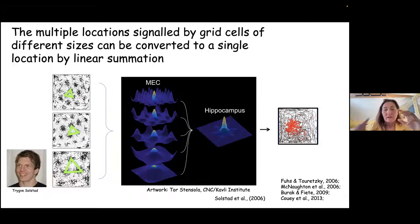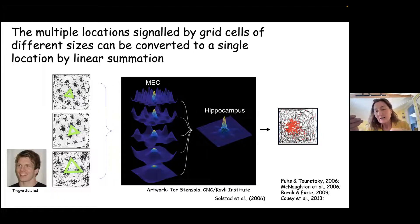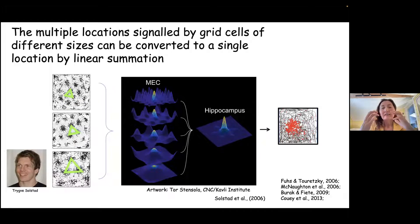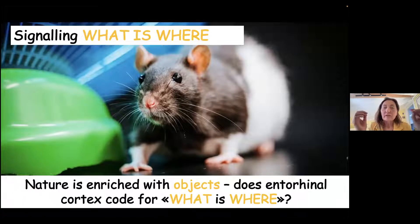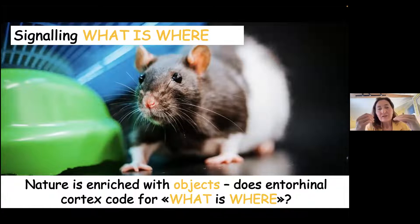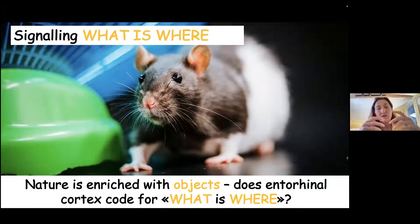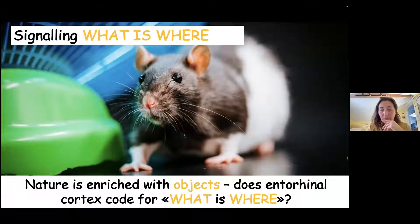We can go from the information given by the entorhinal cortex to the hippocampus. We concluded that this model makes it quite likely that the hippocampus is using information from the grid cells to make place fields. I promised to talk not only about where things happen — the spatial map — but also about what is happening where, moving more into the cognitive map of Tolman, and also as O'Keefe and Nadel described.